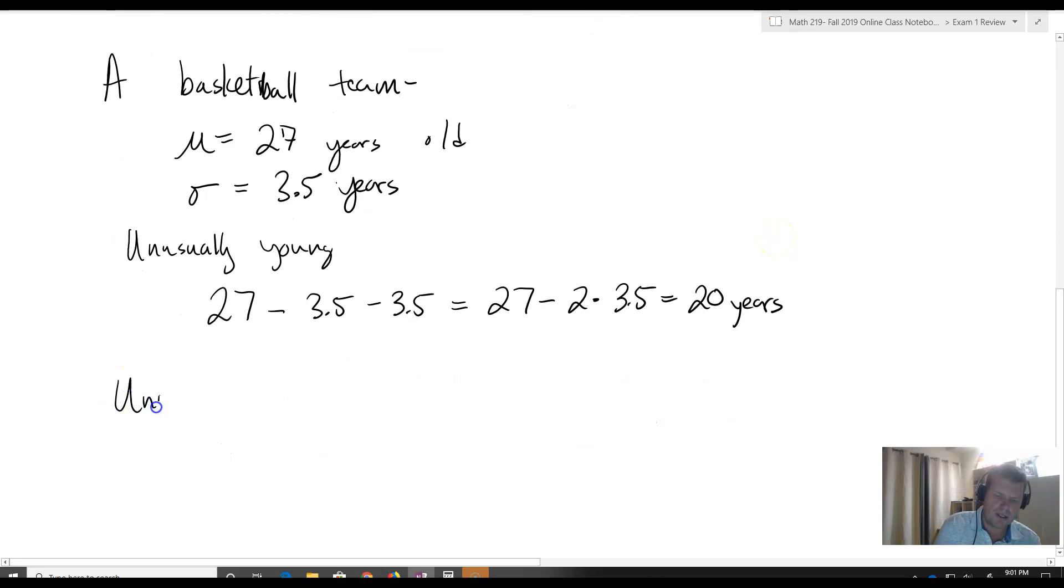An unusually old person is two standard deviations above the mean, so that would be 27 plus 3.5 plus 3.5, or 27 plus 2 times 3.5, which is equal to 34 years old.